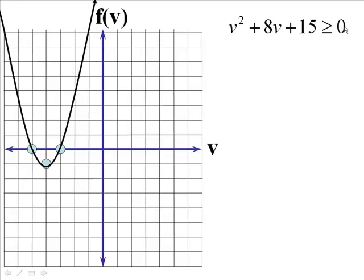Going back to my original inequality here. What we want to know is when is F of V going to be greater than 0? When is it going to be positive? F of V is positive up here. Not down here. Down here F of V is negative.